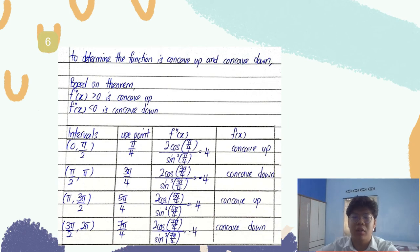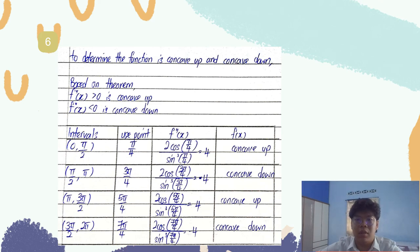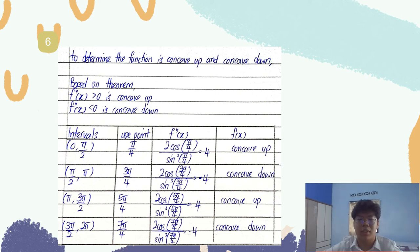Based on the theorem, when the second derivative is positive the function is concave up, and when the second derivative is negative the function is concave down. Using the same method of substituting a point from each interval into the second derivative: on the first and third intervals, the second derivative equals 4, which is positive, so the function is concave up on (0, π/2) and (π, 3π/2). On the second and fourth intervals, the second derivative equals negative 4, so the function is concave down on (π/2, π) and (3π/2, 2π).